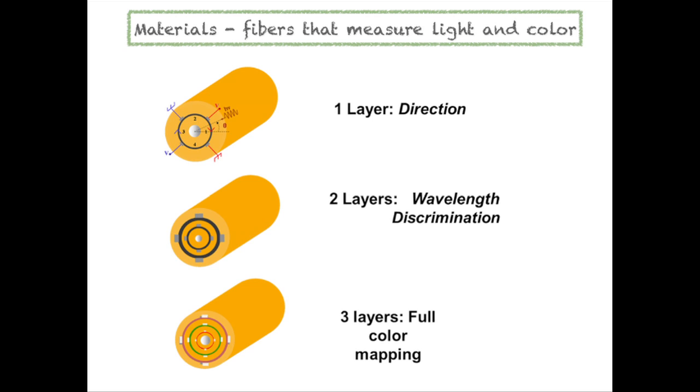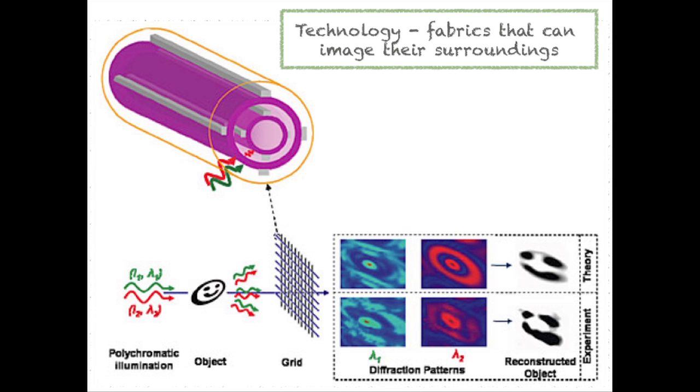And so we in fact then did an experiment. We had a little smiley face. We illuminated this smiley face with green and red light. Our fabric collected the optical information, fed it into a computer, and the computer was able to discern, to identify the object from which the light emanated. A fabric that sees.